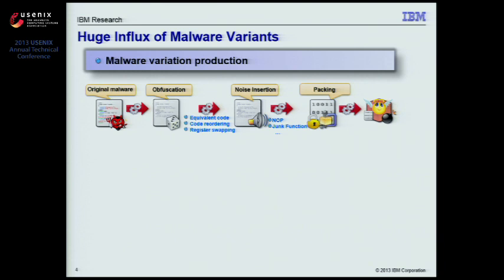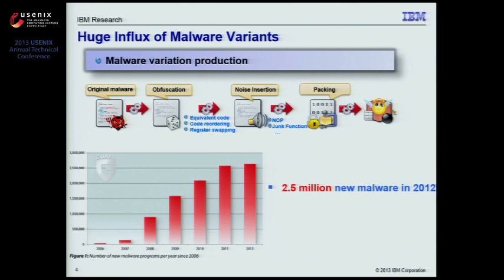The existence of automatic tools to perform such mutation makes this process easy and also leads to the explosive increase in the number of malware variants seen in the field. According to a recent report, the number of new malware variants seen in 2012 reaches about 2.5 million — equivalent to more than 7,000 new variants seen every day.